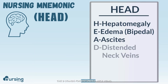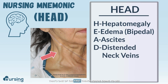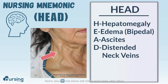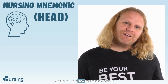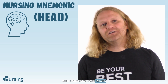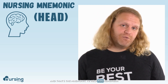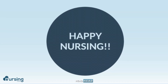The D stands for distended neck veins. That's one of the first things you're going to see and how you're going to identify one of these patients. You'll walk in the room, see these distended neck veins, and you're going to think right-sided heart failure. That's how you assess a patient with right-sided heart failure, and that's the mnemonic to help you remember: HEAD, H-E-A-D.